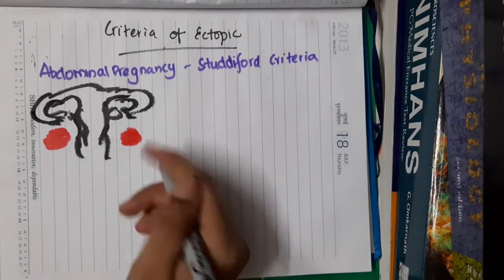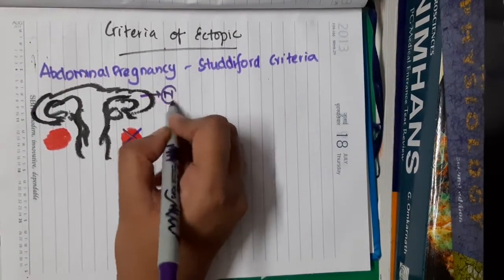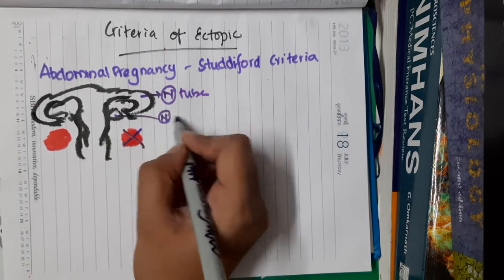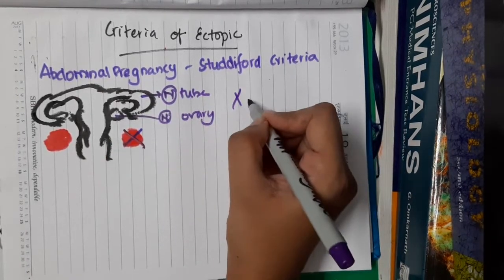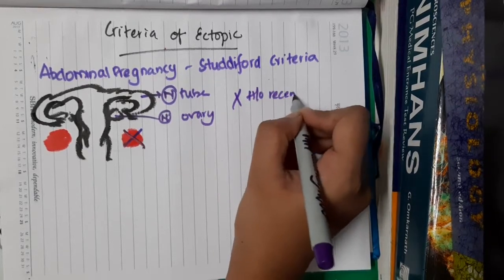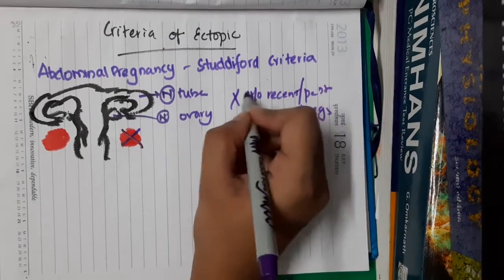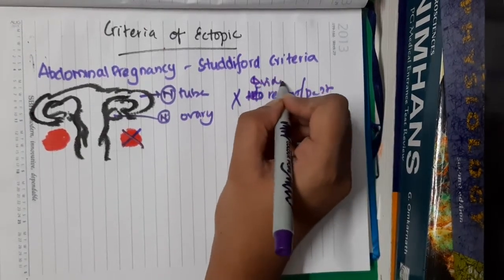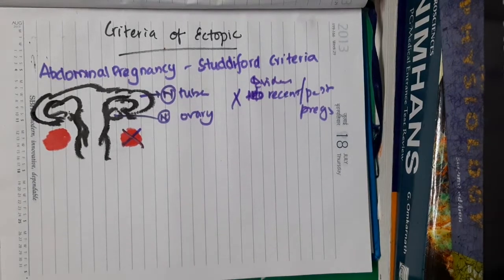In Studdiford's criteria, the tubes will be normal, the ovaries are normal, and there is no evidence of recent or past pregnancy — meaning no gestational sac or similar findings will be seen.